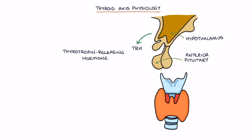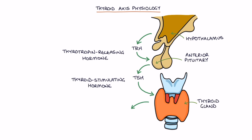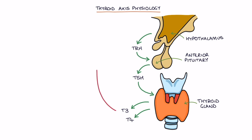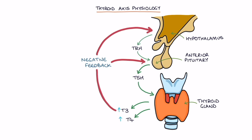TRH stimulates the anterior pituitary to release thyroid stimulating hormone, or TSH. TSH stimulates the thyroid gland to release triiodothyronine, or T3, and thyroxine, or T4. T3 and T4 provide negative feedback on the hypothalamus and the anterior pituitary. When there's too much T3 and T4, this suppresses the release of TRH and TSH.